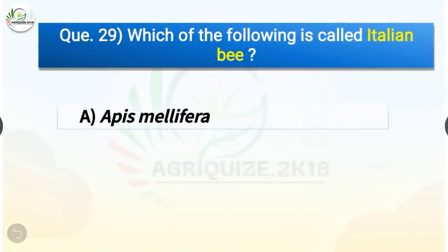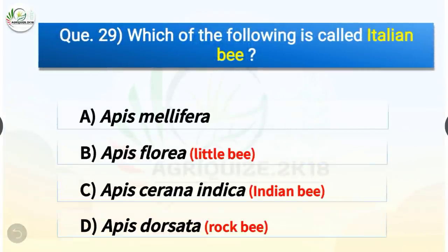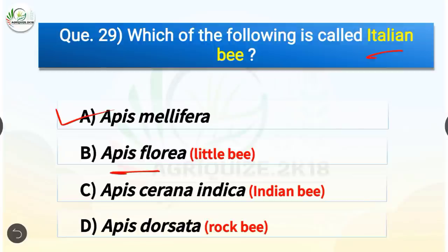Question number 29. Which of the following is called the Italian bee? The options are Apis mellifera, Apis florea, Apis cerana indica, or Apis dorsata. The correct answer is option A, Apis mellifera. Apis mellifera is called the Italian bee, Apis florea is called the little bee, Apis cerana indica is the Indian bee, and Apis dorsata is the rock bee.